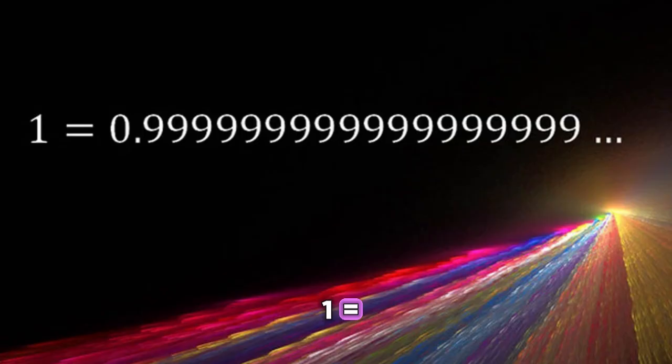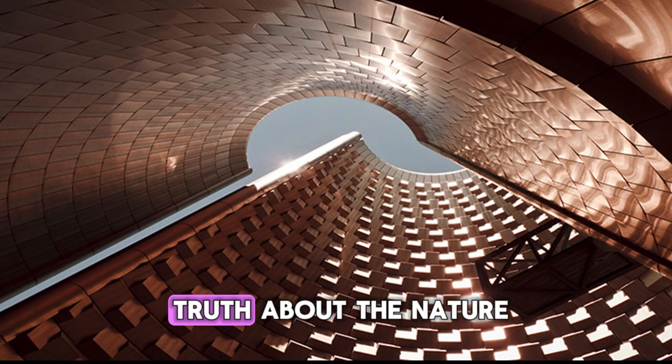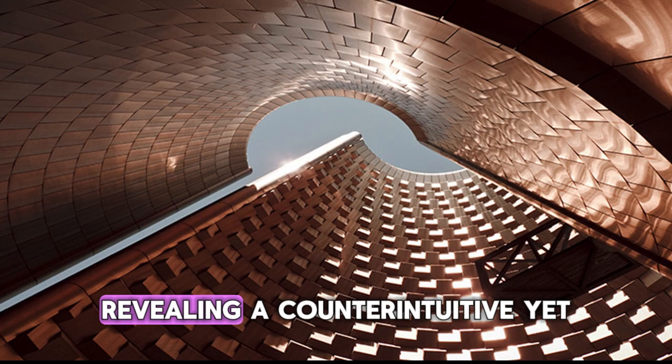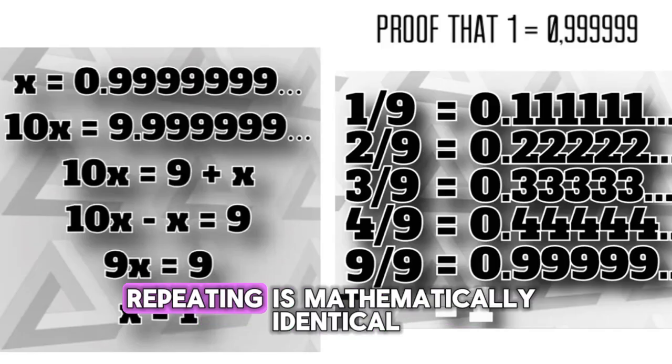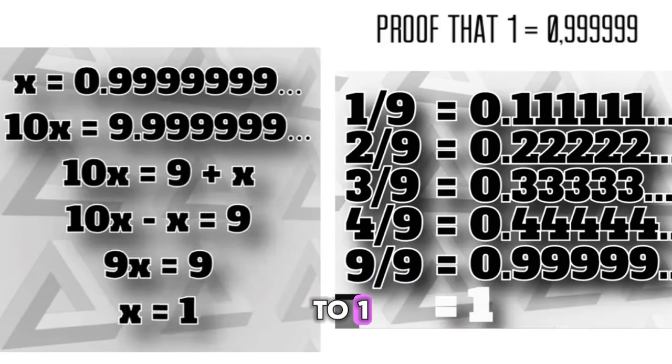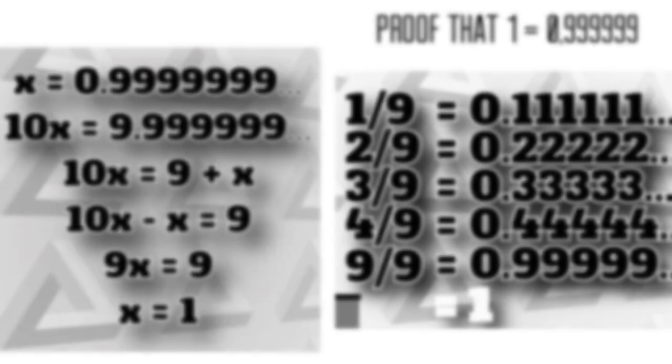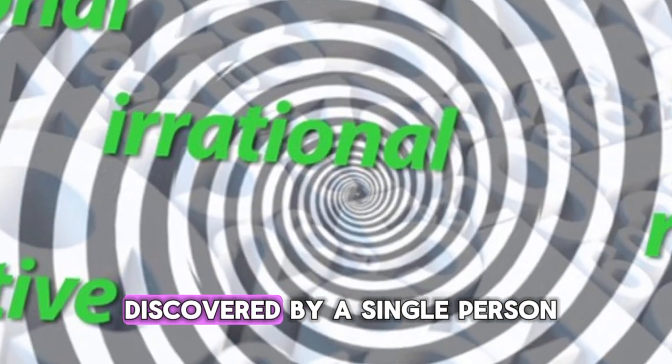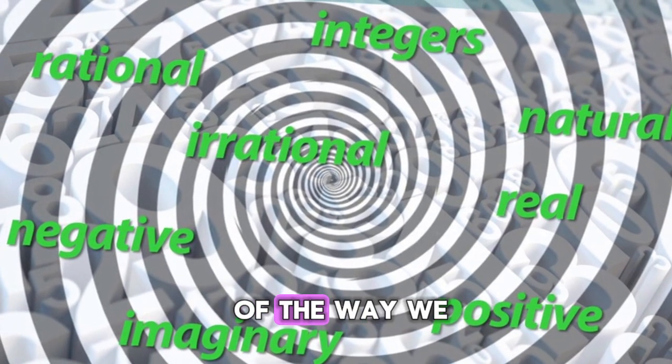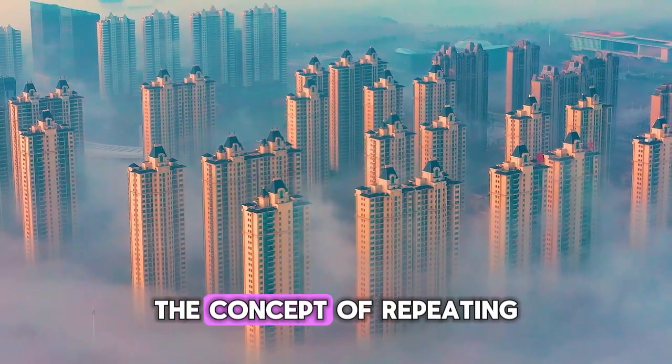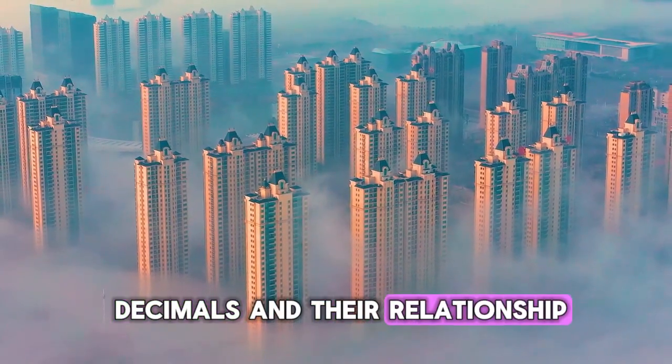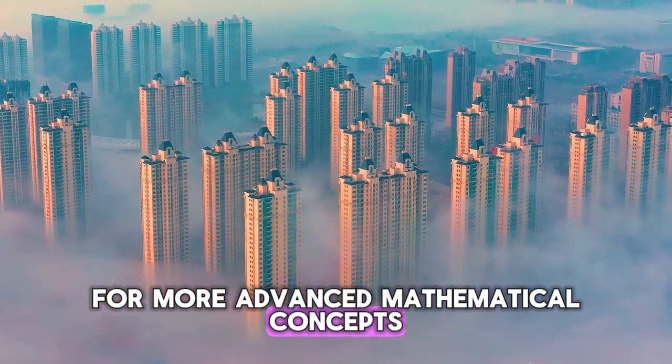At number five, I have the equation one equals 0.999, where the number nine repeats infinitely. It highlights a fundamental truth about the nature of numbers and infinity, revealing a counterintuitive yet elegant relationship. It demonstrates that 0.9 repeating is mathematically identical to one, despite initial impressions. The equation was not discovered by a single person. Instead, it is a consequence of the way we define real numbers and decimal representation. The concept of repeating decimals and their relationship to fractions is a building block for more advanced mathematical concepts.